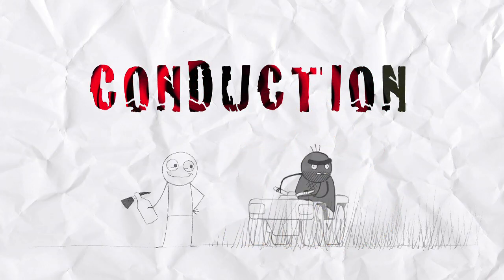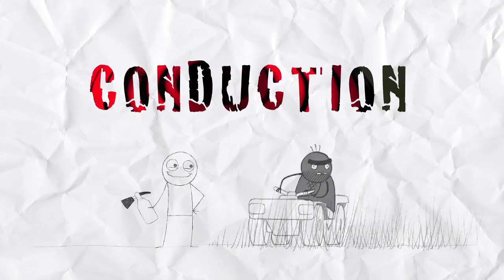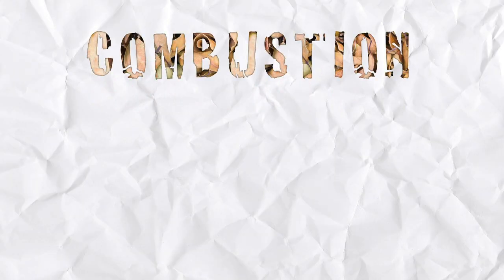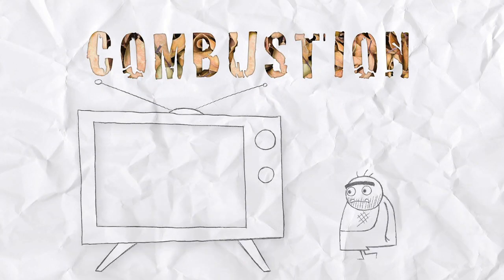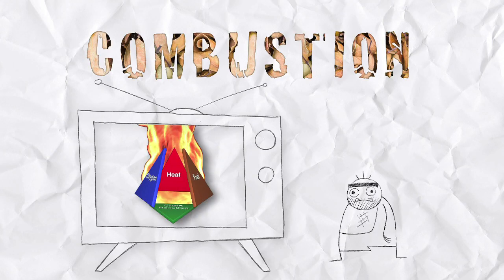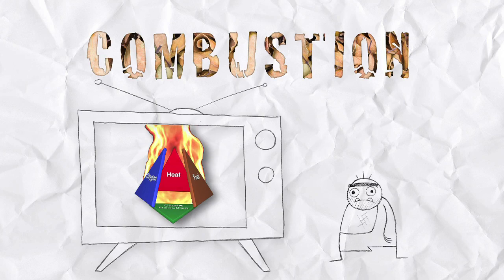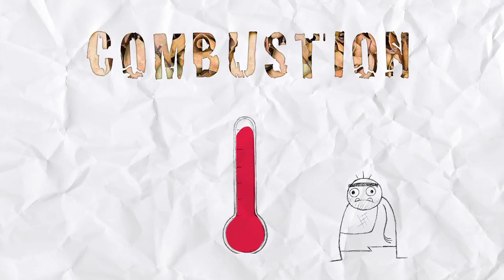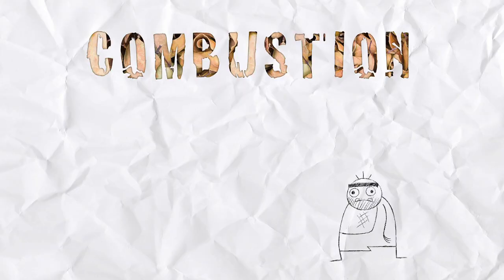We can't control oxygen very well because it's all around us, but we can control fuel and heat by keeping them away from each other. And because we can control them, we can also control the fourth requirement for starting a fire: combustion — the chemical reaction that ignites the fuel. If this chemical reaction doesn't happen, fire doesn't happen. On the other hand, if the right kind of fuel, a high enough heat source, and adequate oxygen are present, combustion has a very good chance of taking place.